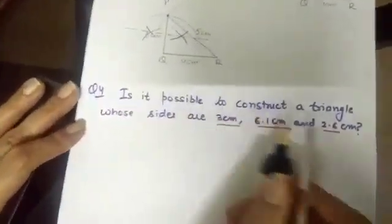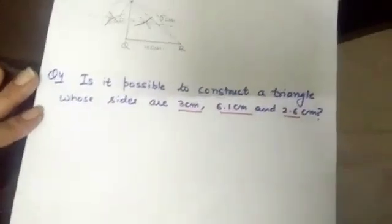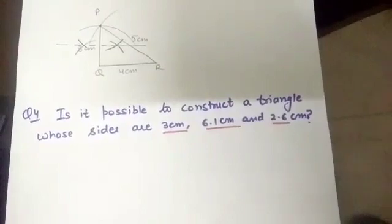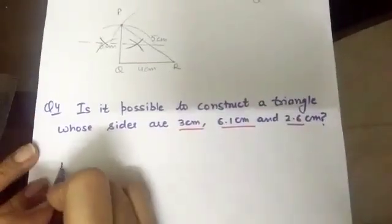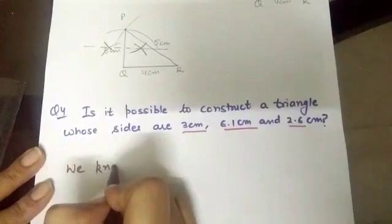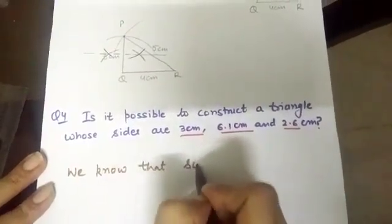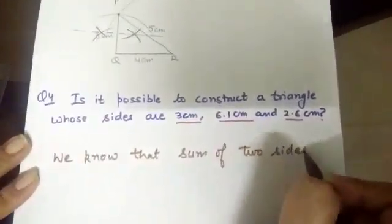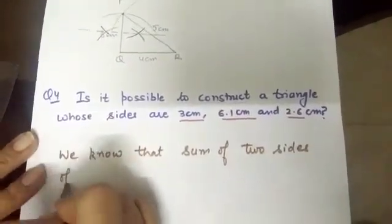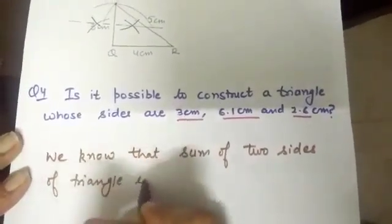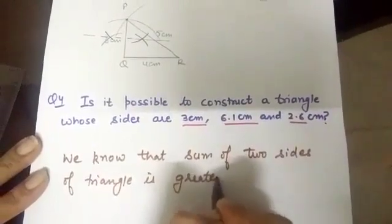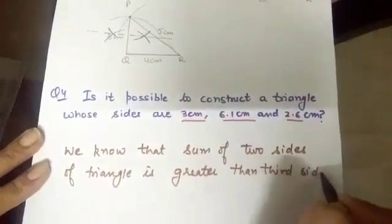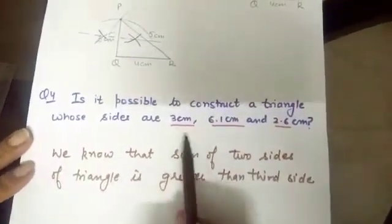Next, is it possible to construct a triangle whose sides are 3 cm, 6.1 and 2.6 cm? Now, the question is in the form of a question. Is it possible? We know that in this question you are going to write that. We know that sum of two sides of triangle, we have done already this property, sum of two sides of triangle is greater than third side.